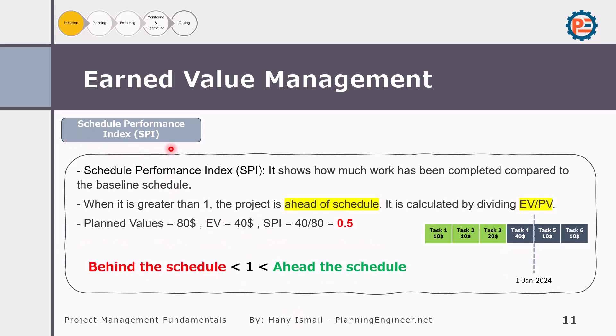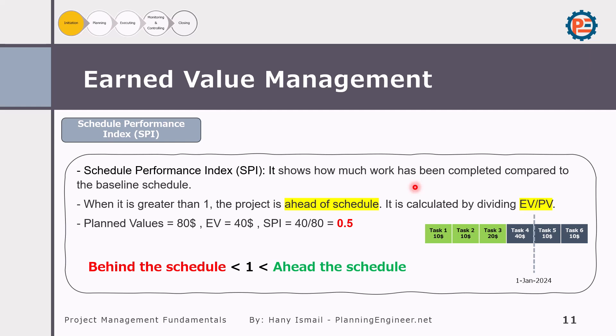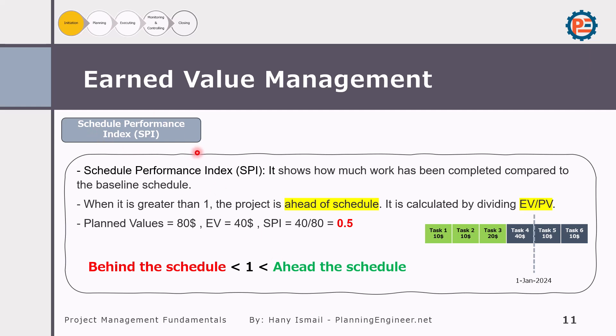Schedule Performance Index, or SPI, is a very important KPI — Key Performance Indicator. The Schedule Performance Index shows how much work has been completed compared to the baseline schedule. It is calculated by dividing earned value by planned value. An SPI greater than one means the project is ahead of schedule. In our case, SPI is 0.5, indicating we are behind schedule. CPI is related to cost — you may be under budget yet delayed on the project. SPI tells you whether you are ahead or behind schedule, while CPI tells you whether you are paying more money than expected.